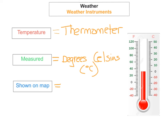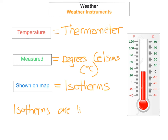Temperature is shown on a map by isotherms. You need to know how each different type of weather is shown on a map. Isotherms are lines on a map joining places of equal temperature.